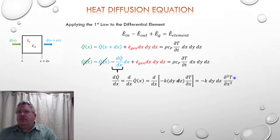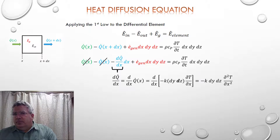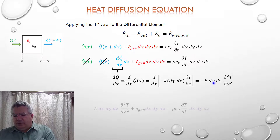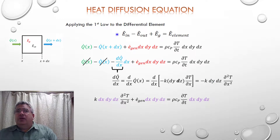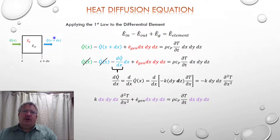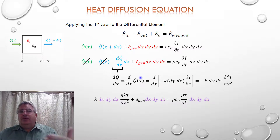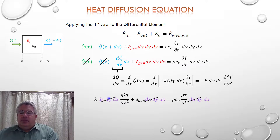We write this as a partial derivative because temperature is also a function of time. Plugging this term back in: the negative times negative makes this term positive, and the dx term combines to give a dx·dy·dz factor just like the other terms. So applying the First Law to the differential element — using the Taylor series expansion and Fourier's law — we arrive at an expression with k·(∂²T/∂x²)·dx·dy·dz plus the generation and storage terms.